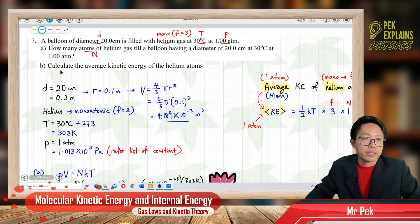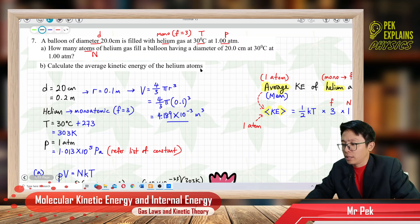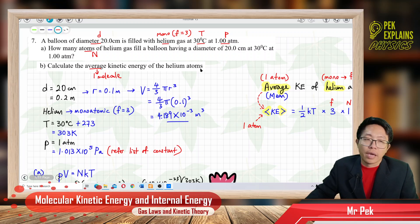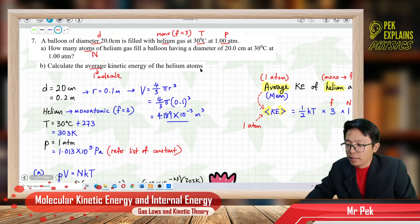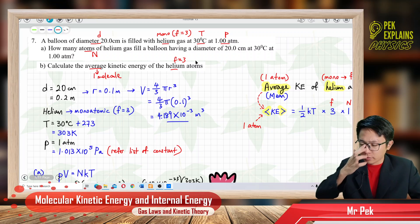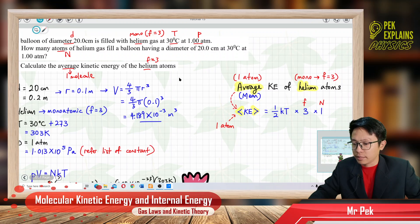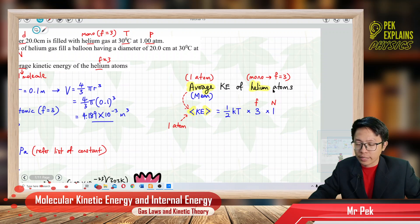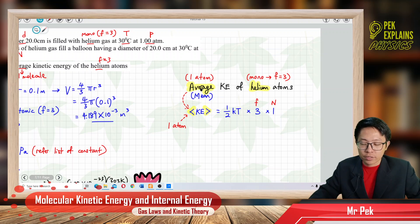Now the next question asks, what is the average kinetic energy of the helium atoms? The word average here means only one molecule. Average means one molecule. Helium means monoatomic, so only 3 degree freedom.